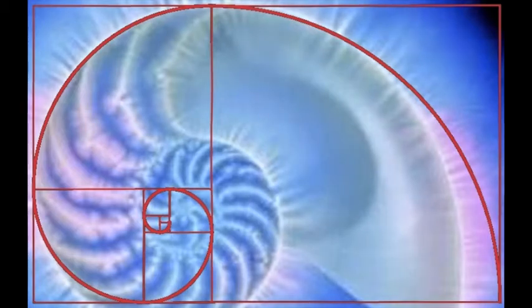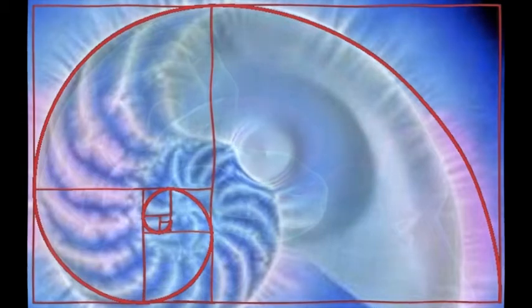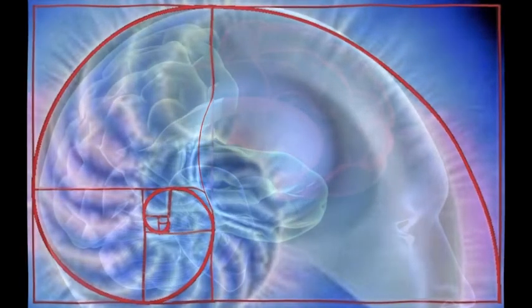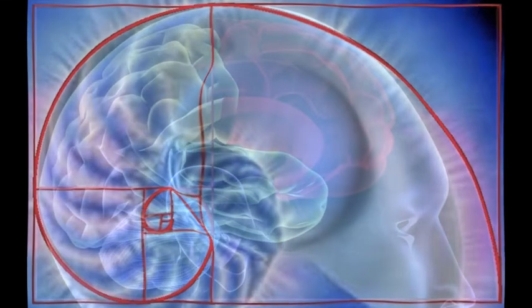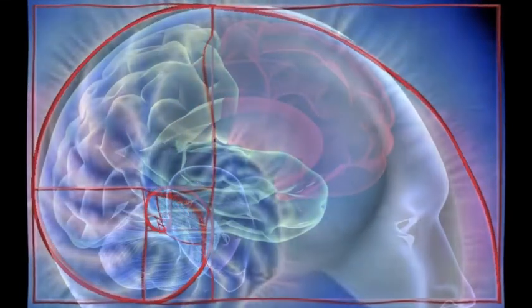For these reasons we thus decompose the perfect or ideal Fibonacci spiral from its similar, though imperfect and irreplicably unique counterparts.